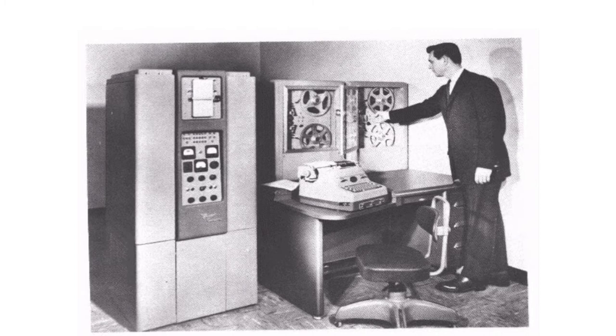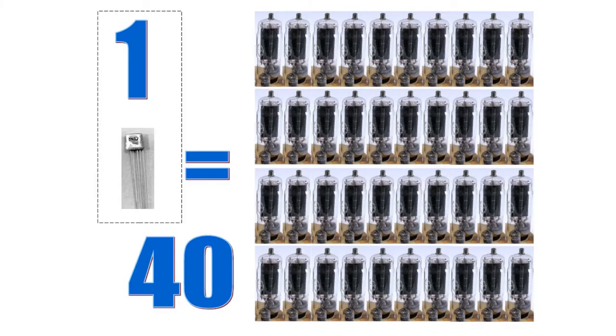These were also the first computers that stored their instructions in their memory, which moved from a magnetic drum to magnetic core technology. The first computers in this generation were developed for the atomic energy industry. Here in this picture is shown the efficiency of a transistor used in second generation computers over the vacuum tubes which were used in the first generation computers. One transistor efficiently replaced approximately 40 vacuum tubes.